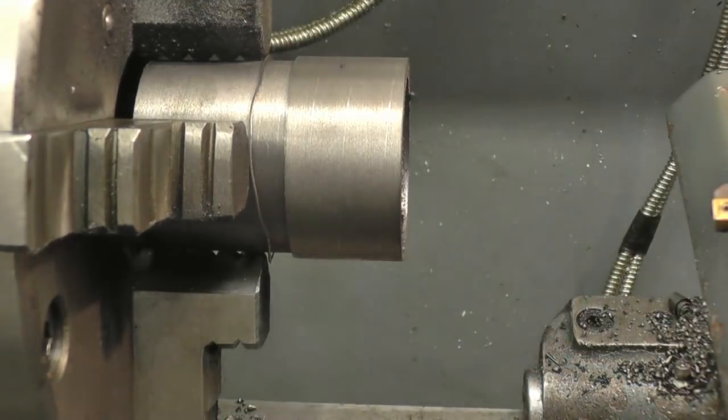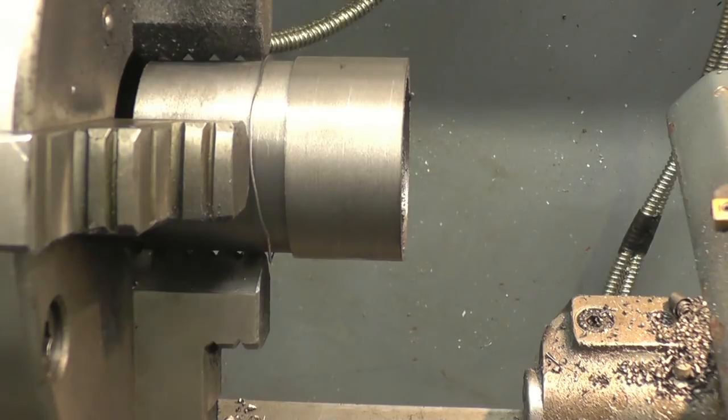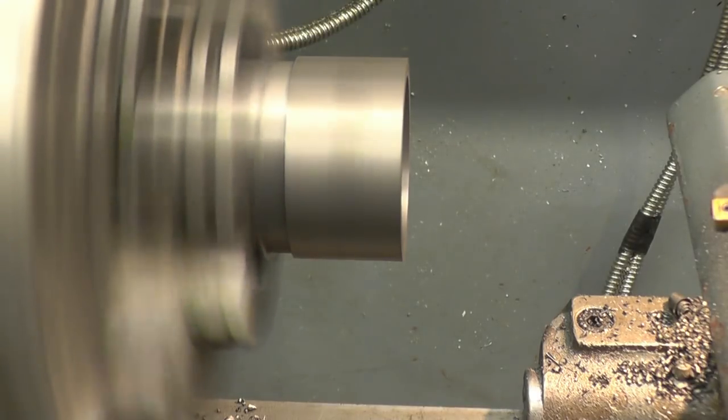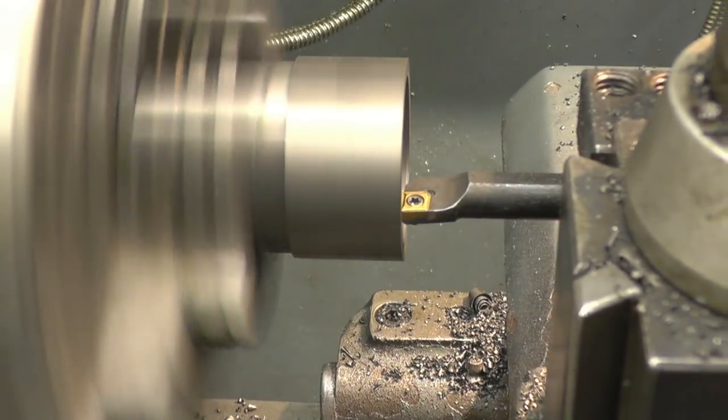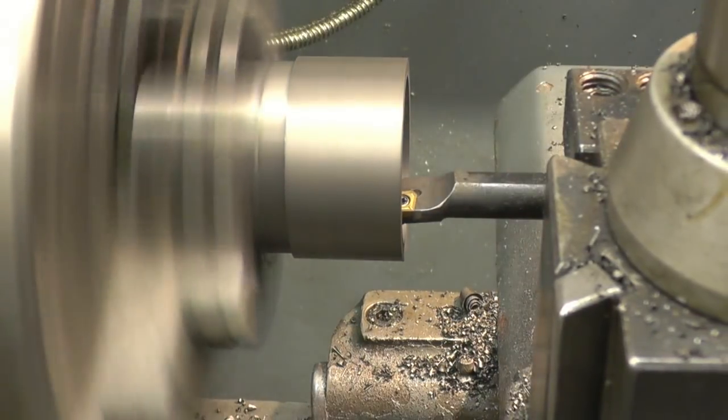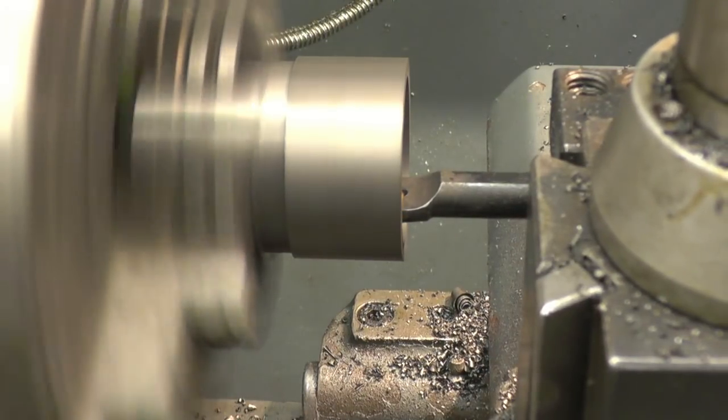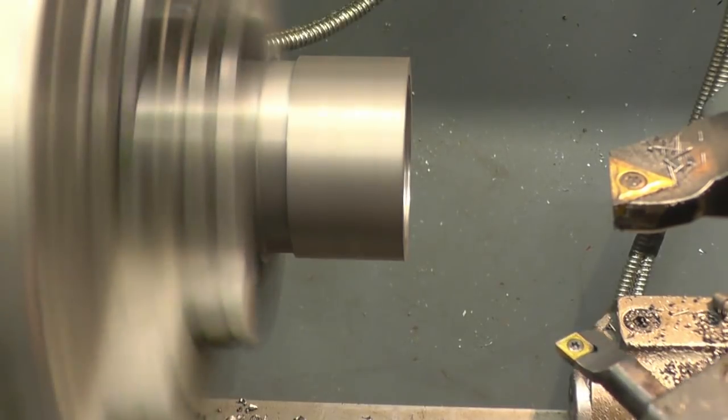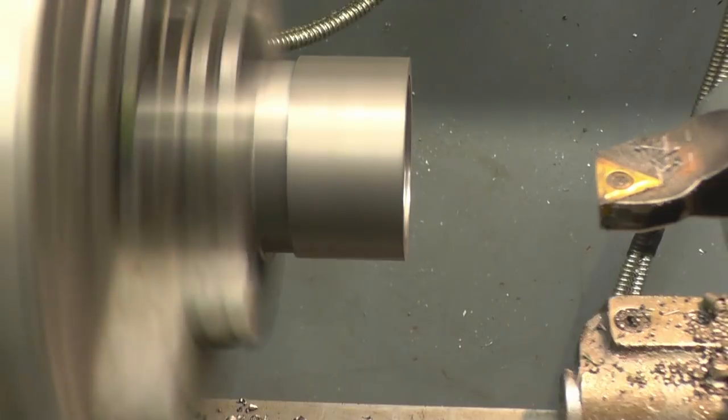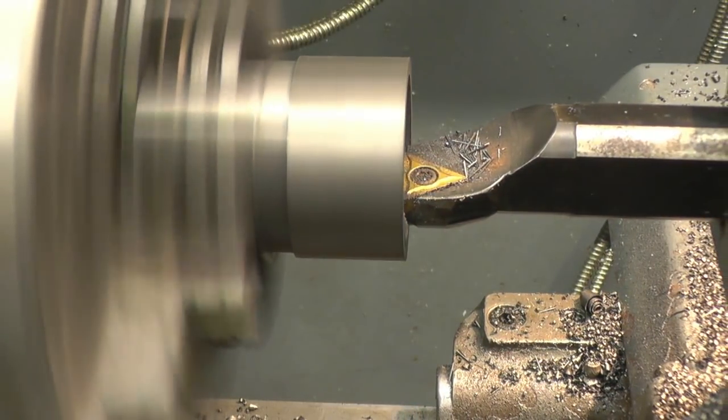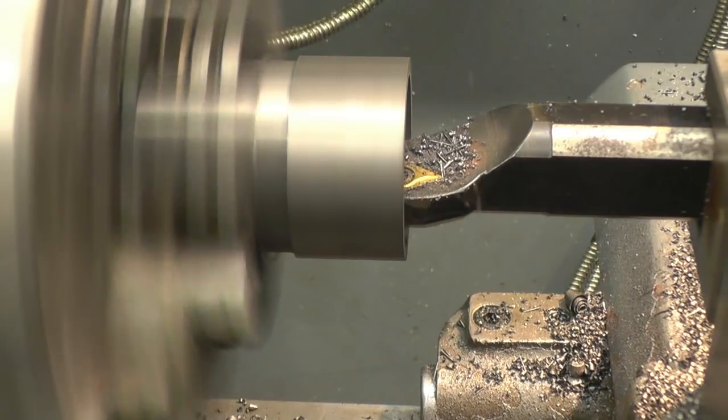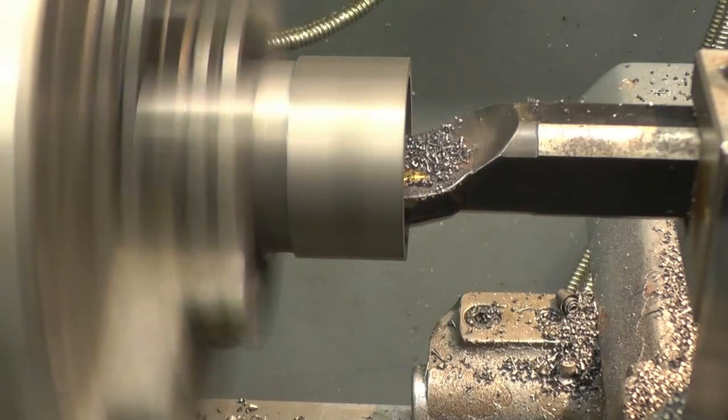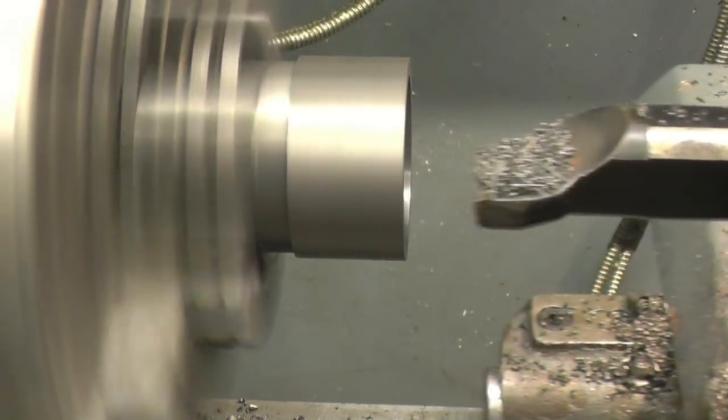As you can see I've come in with a much stiffer boring bar that won't flex. That's the same cut as the other one - there's no vibrational chatter on that. I've set the zero on the DRO as well. I don't know why I didn't do that in the first place, it'll be a lot simpler.